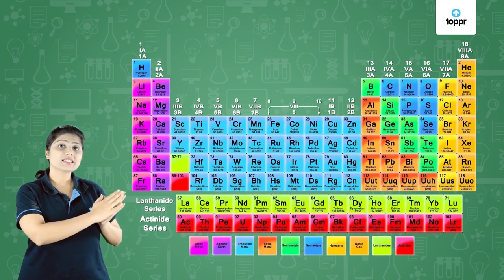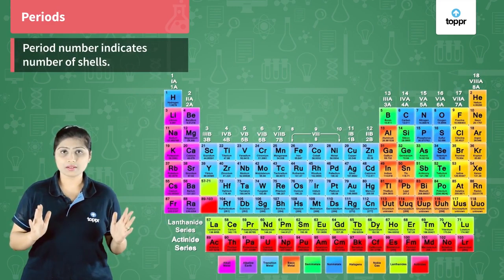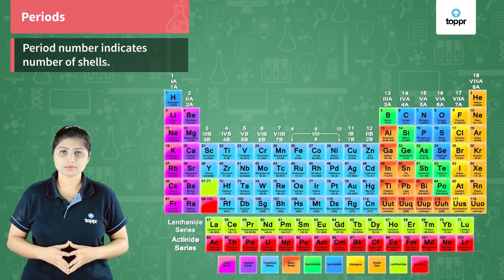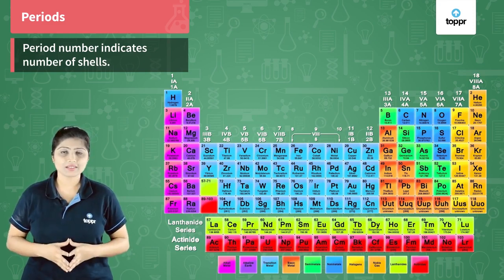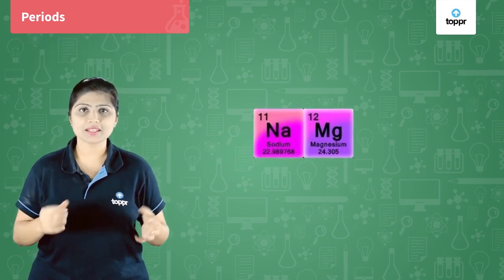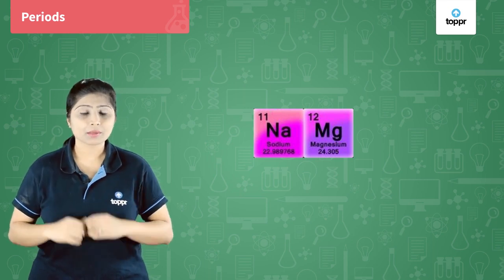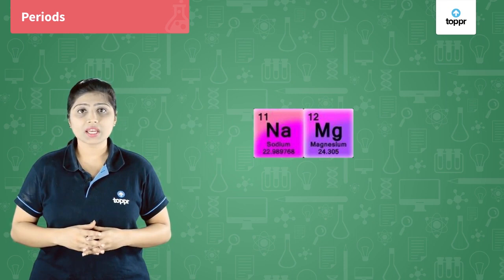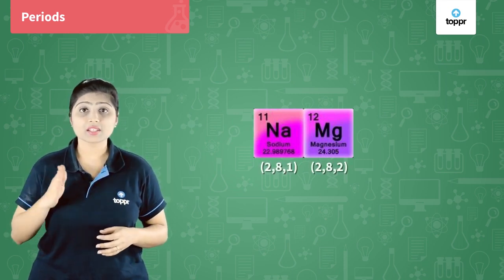Let us begin with understanding what are periods. Elements in the same period have the same number of shells in their atoms. Shells are also called orbits in which electrons exist. For example, we talk about sodium and magnesium. They belong to the same period 3. Sodium's atomic number is 11, which means it has 11 electrons. When we arrange the electrons in shells, the electronic configuration of sodium becomes 2, 8, 1.